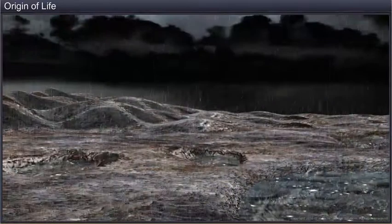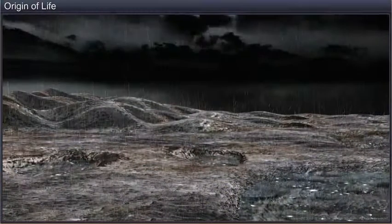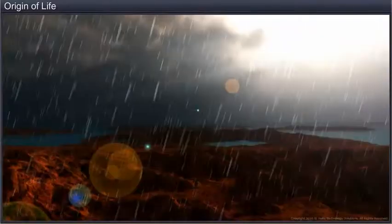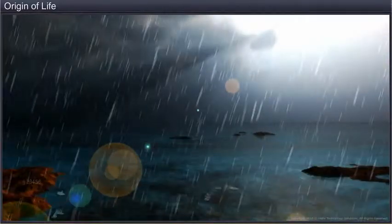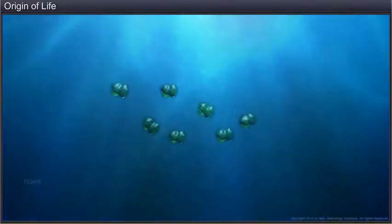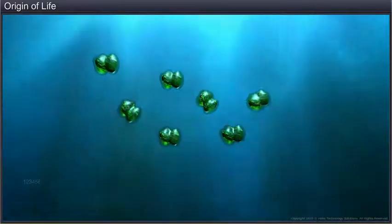Some of the water vapor cooled and came down as rain, which filled all the deep depressions on the Earth and formed oceans. It is estimated that life appeared on Earth 500 million years after its formation.